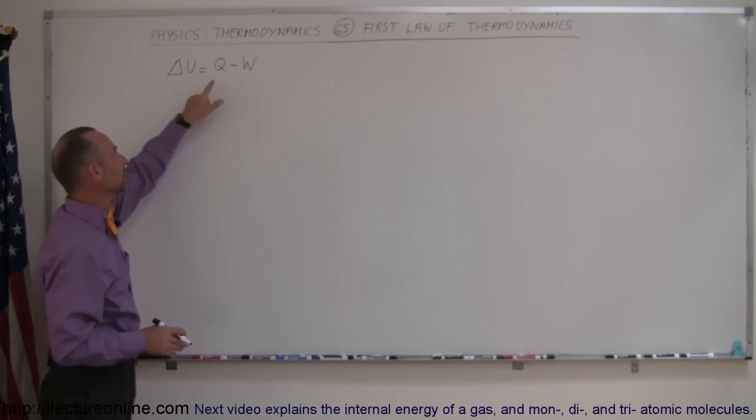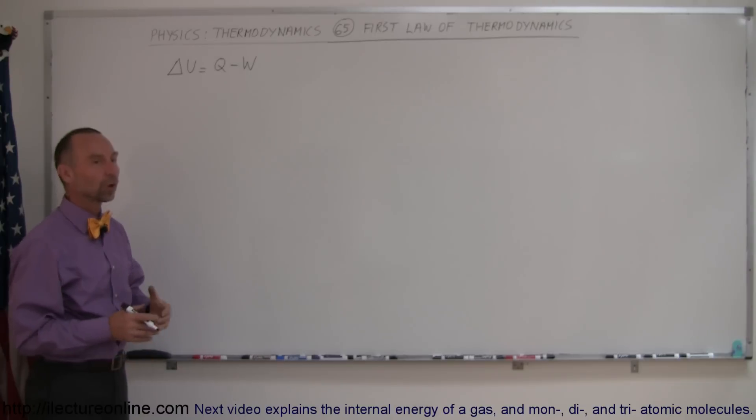Now of course you need to understand what these variables mean, but U means internal energy of the gas, Q means heat, and W means work.